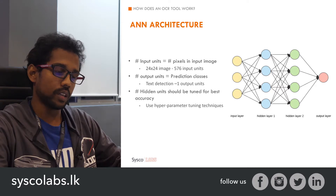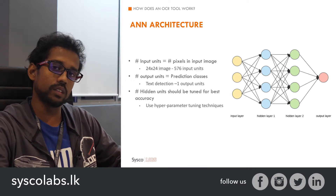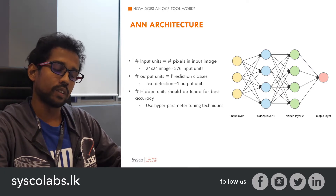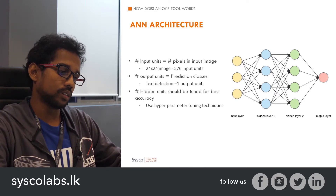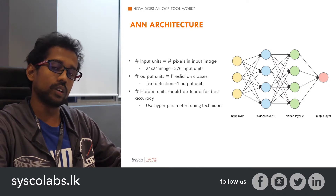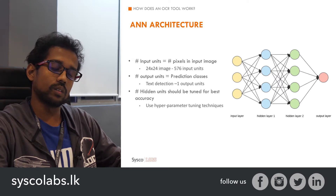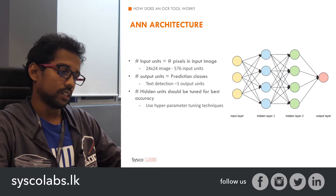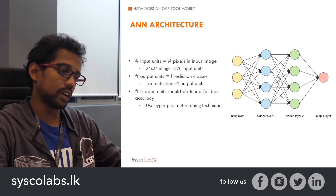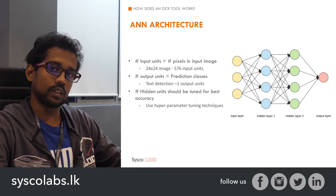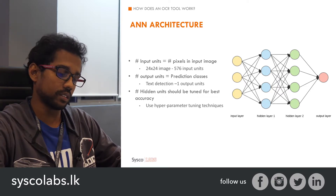The number of input units and output units are straightforward. Since we are feeding an image to the model, the number of input units equals the number of pixels — for a 25×25 image there will be 576 pixels, so the input layer has that many units. The output units depend on the number of classes; for text detection with two classes, we can use one output unit — zero or one. The tricky part is identifying the number of hidden units and layers, which must be fine-tuned for best accuracy using hyperparameter tuning approaches.